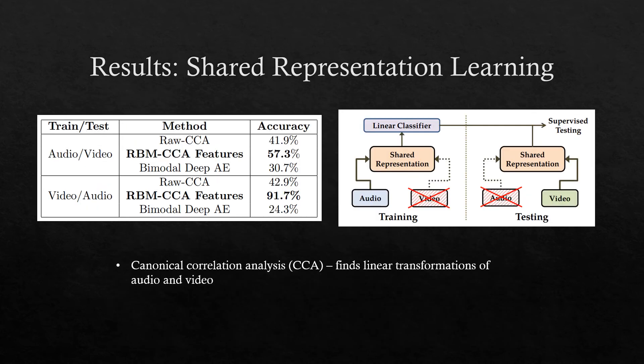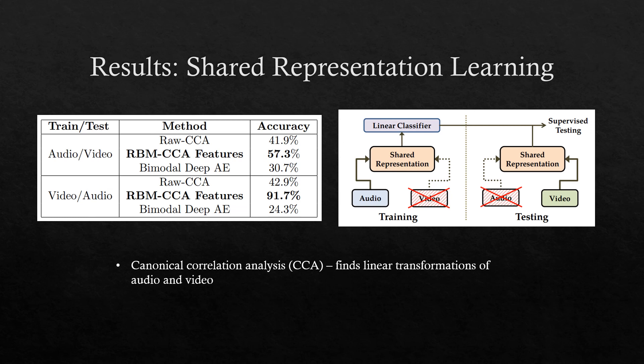The experiment also tested whether a shared representation can be learned over audio and visual data. The figure on the right shows how the algorithm is given data from audio then tested on video. Canonical correlation analysis (CCA) was used to form a shared representation. The best results were on raw data, specifically learning the CCA representation on audio RBM and video RBM first. These results were surprising because testing on audio performed better than testing on video, and the results also showed that learned representations are partially invariant to input modality.